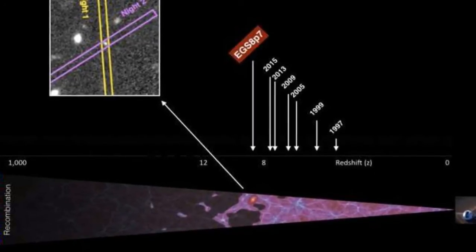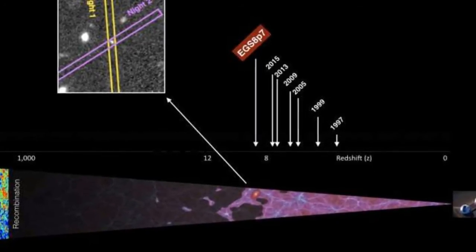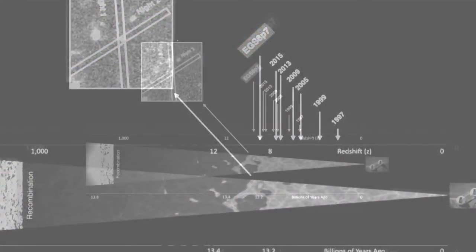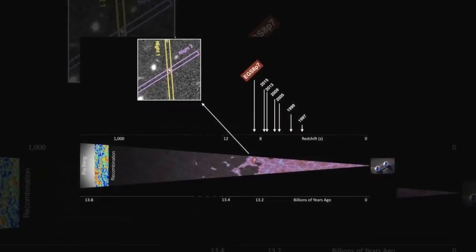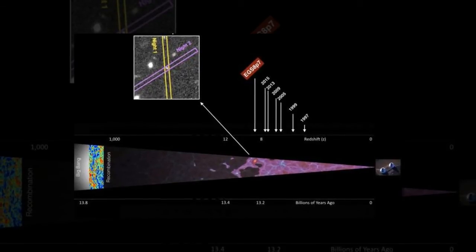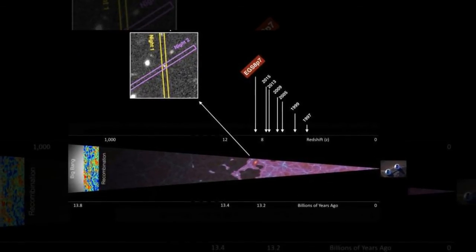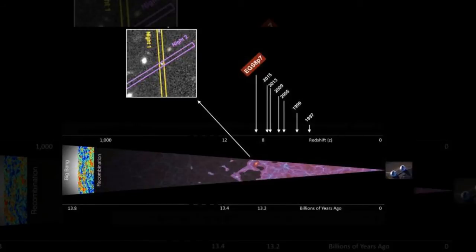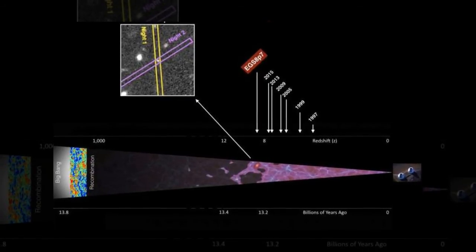Although this is a frequently detected signature in galaxies close to Earth, the detection of Lyman-alpha emission at such a great distance is unexpected as it is easily absorbed by the numerous hydrogen atoms thought to pervade the space between galaxies at the dawn of the universe.